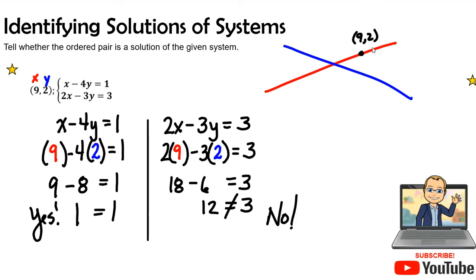It could be on the blue line as well, but it's not where the point of intersection is. I hope this was a quick review on how to identify solutions of systems. Please check out our channel, subscribe, like, and hit the bell notifications so you know the next time a video is produced.